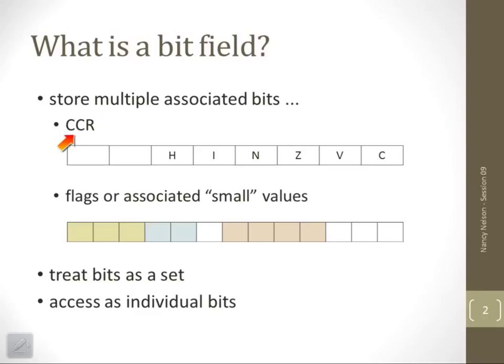A good example is the condition code register or status register of a processor. Here we have six individual bits that each represent something different, but it doesn't make sense to use six integers or six characters to represent those when we can store them all together.